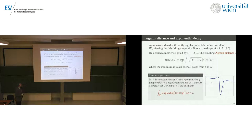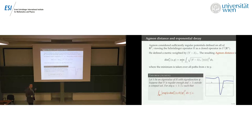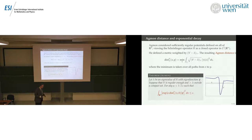Agmon introduced the Agmon distance, which works as follows. Define a function equal to the difference between the potential V at a point and some eigenvalue λ: if it's positive, that's V minus λ; if V is less than λ, set it to zero. Take that as a conformal factor to define a Riemannian metric — you measure distance weighted by how much V exceeds the eigenvalue. The Agmon distance between two points is the shortest path measured in this weighted metric.